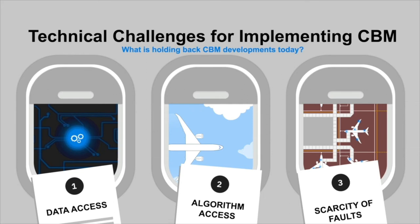Secondly, there are many algorithms already available for prognostics and scheduling optimization, but for us to try them one by one is very time consuming because they're all quite different from each other. Third but not least, failures and faults are very uncommon in this domain. To train a data-driven algorithm, we'd need to combine lots of data from multiple airlines to get enough failures — but airlines are quite reluctant to share their data. So we need solutions for these three challenges.